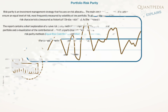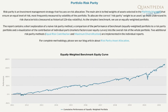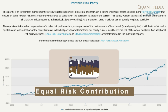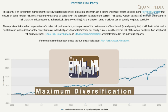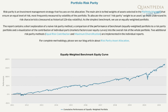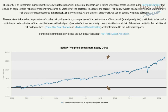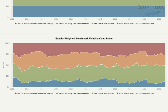The report contains a short explanation of three risk parity methods: naive risk parity, equal risk contribution, and maximum diversification. As the simplest benchmark, we use an equally weighted portfolio. The report consists of a comparison of the performance of an equally weighted benchmark portfolio to a risk parity portfolio, and a visualization of the contribution of individual parts into the overall risk of the whole portfolio for each methodology.